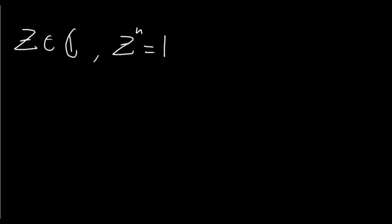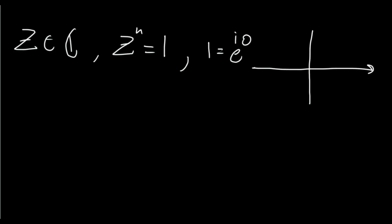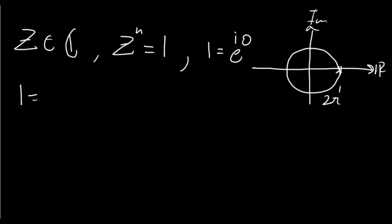We want to actually be able to find these roots of unity explicitly, so let's go ahead and write 1 in complex exponential form. 1 is equal to e to the i times 0, because anything to the power of 0 is 1. But if we look at our complex plane, we can take our complex number and rotate it any integer multiple of 2π and we'll still be back at 1. So we can write that 1 is equal to e to the i 2π times some integer k, where k starts at 0 and goes up to infinity.